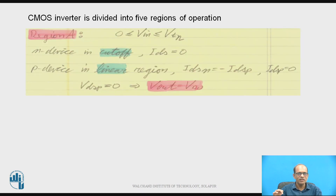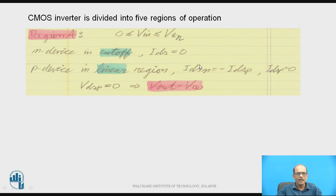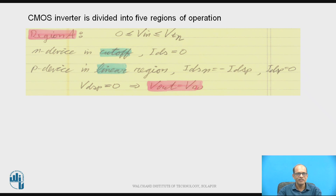CMOS inverter operation is divided into five operating modes or regions. In Region A, the N device is in cutoff and the P device is in non-saturation or linear. IDSP equals minus IDSN and IDSN is 0, therefore VDSP is 0 and Vout equals VDD. That is Region A.